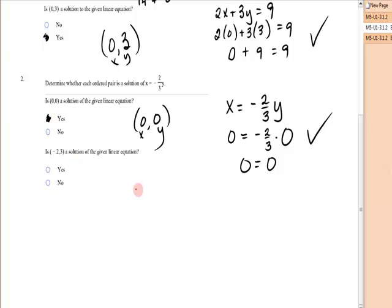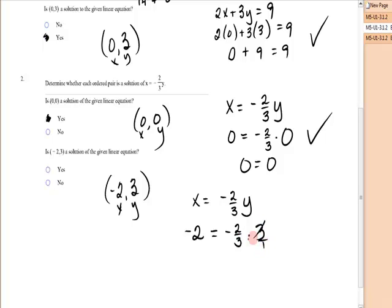The next one is (-2,3) a solution. There's x, there's y. x is equal to negative 2 thirds y. So x, which is negative 2, equal to negative 2 thirds times the y value, which is 3. Well, let's simplify over here. I can put that 3 over 1. Those divide out. And I have negative 2 is equal to negative 2, which is a true statement. So the answer is yes.